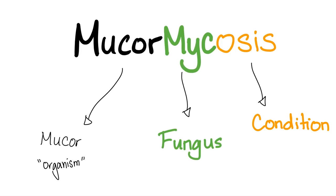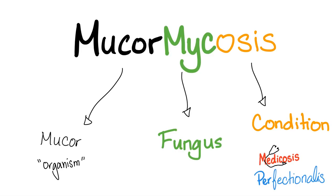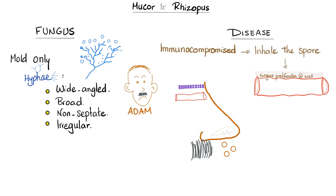Today's topic is mucormycosis, the black fungus. Myco means fungus and osis means condition. Mucor and Rhizopus - let's describe the fungus. Is it dimorphic? No, it's only mold, meaning only hyphae. Describe the hyphae: wide-angled or obtuse-angled, and they are broad. Nonseptate - a septum is a dividing wall inside the hyphae. These do not have septa, so we call them nonseptate. And they are irregular, haphazard.